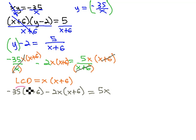Just have to solve this equation by distributing through parentheses. That gives us negative 35x minus 210 minus 2x squared minus 12x equals 5x.